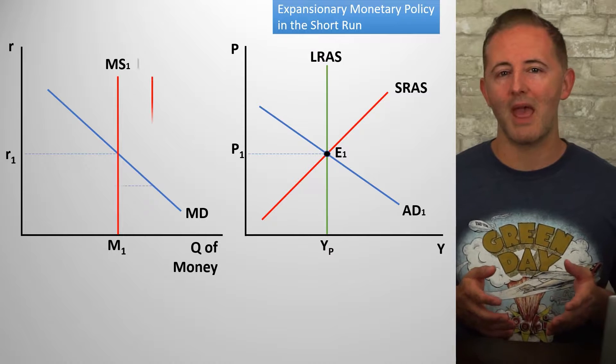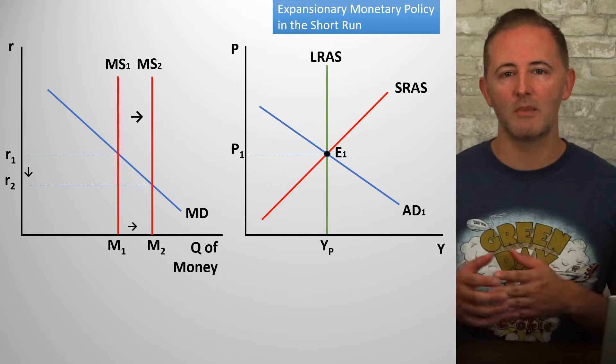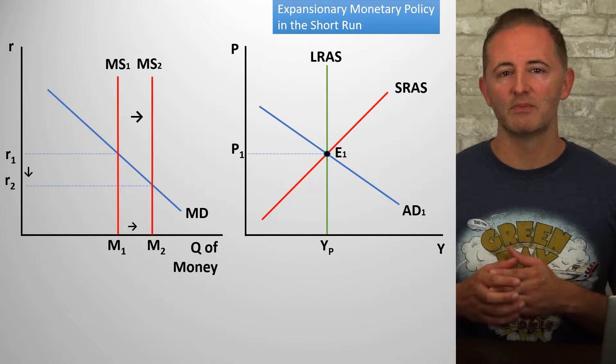We have an equation to support this, but more on that later. Let's go back to what we already know about the money supply and what happens when it increases — all that good stuff from Unit 4. We're going to use our money market and our ADAS models for this.